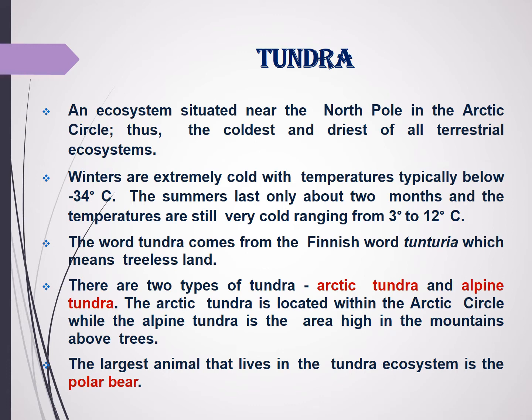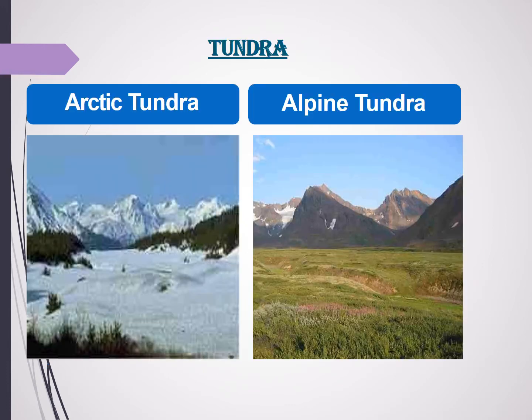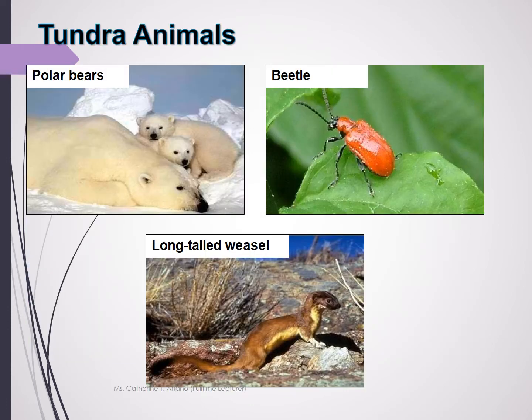The largest animals that live in the tundra ecosystem are the polar bears. Some animals found in the tundra ecosystem include polar bears, beetles, and long-tailed weasels.